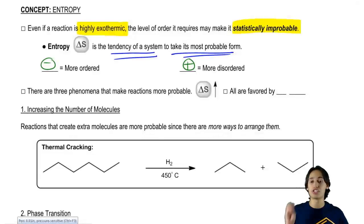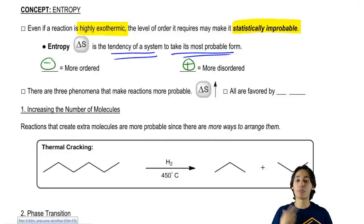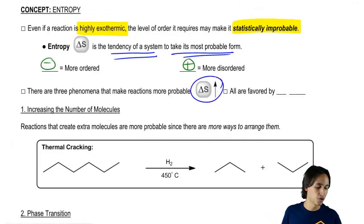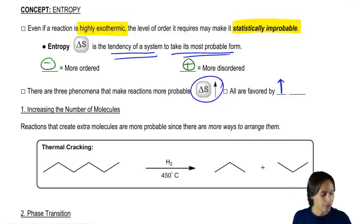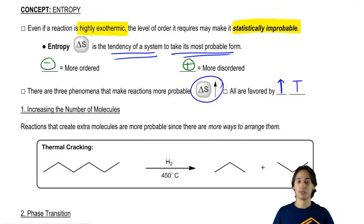So let's talk about these three phenomena that make reactions more probable or make delta S go up. And it turns out that all of them are going to be favored by high temperature. That should be really clear in a little bit when I go back to the equation.